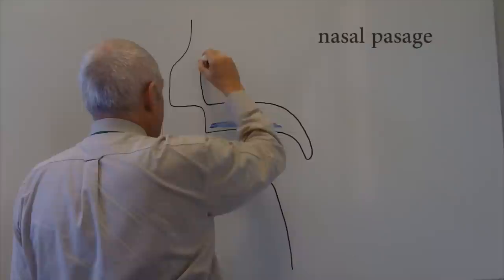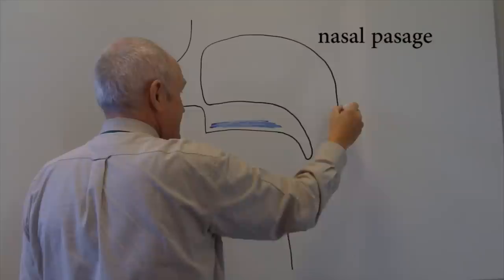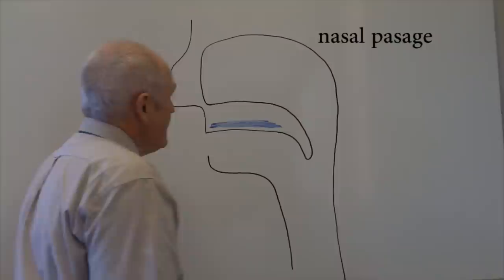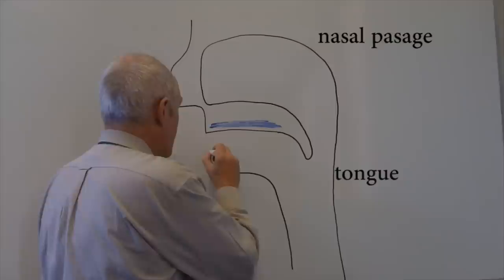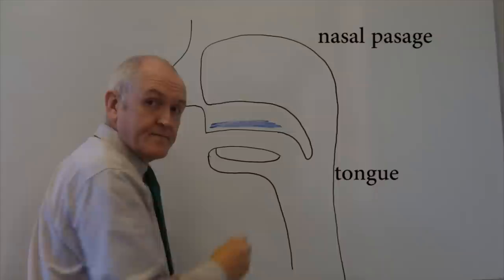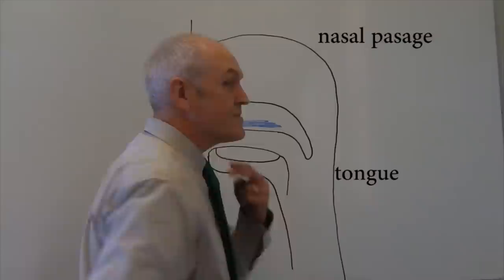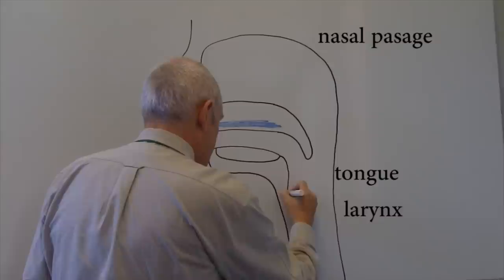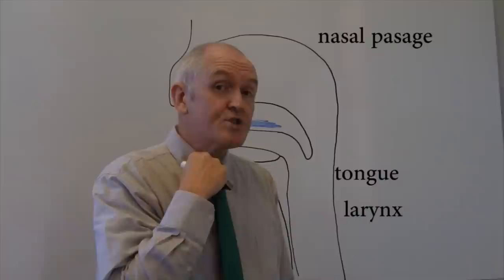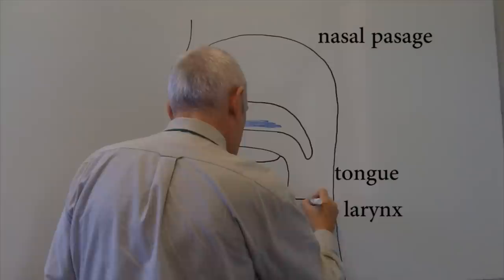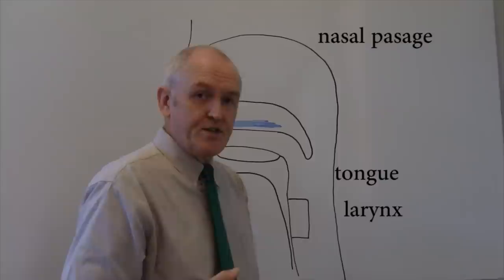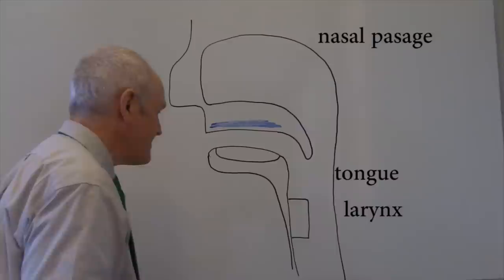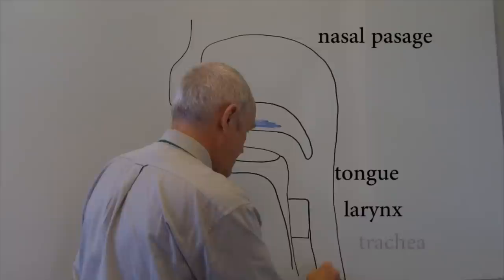Here we have the nasal passages coming back down. Along the base of your mouth you've got your tongue, and then going down you've got that lumpy bit in your throat which is your larynx. The larynx and trachea are actually very superficial near the front of the neck. The larynx is that hard cartilaginous box which contains your vocal cords to generate speech, and the larynx is continuous with the trachea, which has its rings of cartilage.